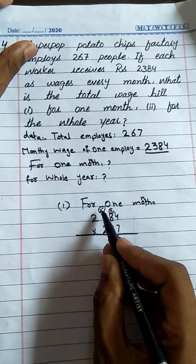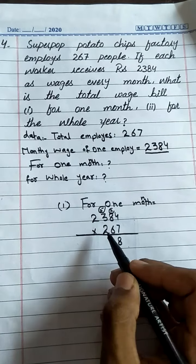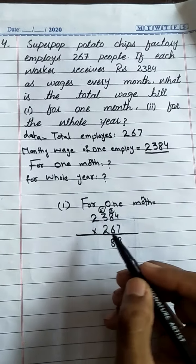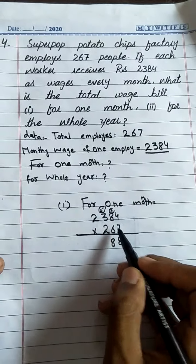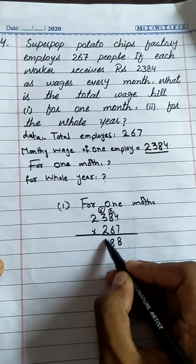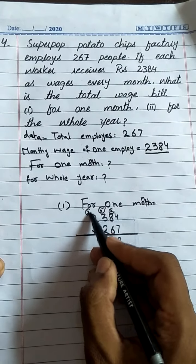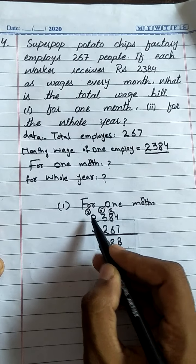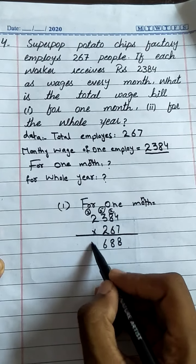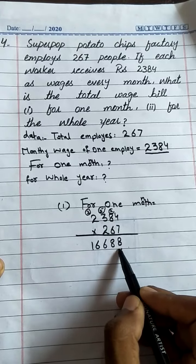So we have the first partial product. Now put a cross and multiply with the second digit 6: 6 × 4 = 24, write 4 carry 2. 6 × 8 = 48, add 2 = 50, write 0 carry 5. 6 × 3 = 18, add 5 = 23, write 3 carry 2. 6 × 2 = 12, add 2 = 14.